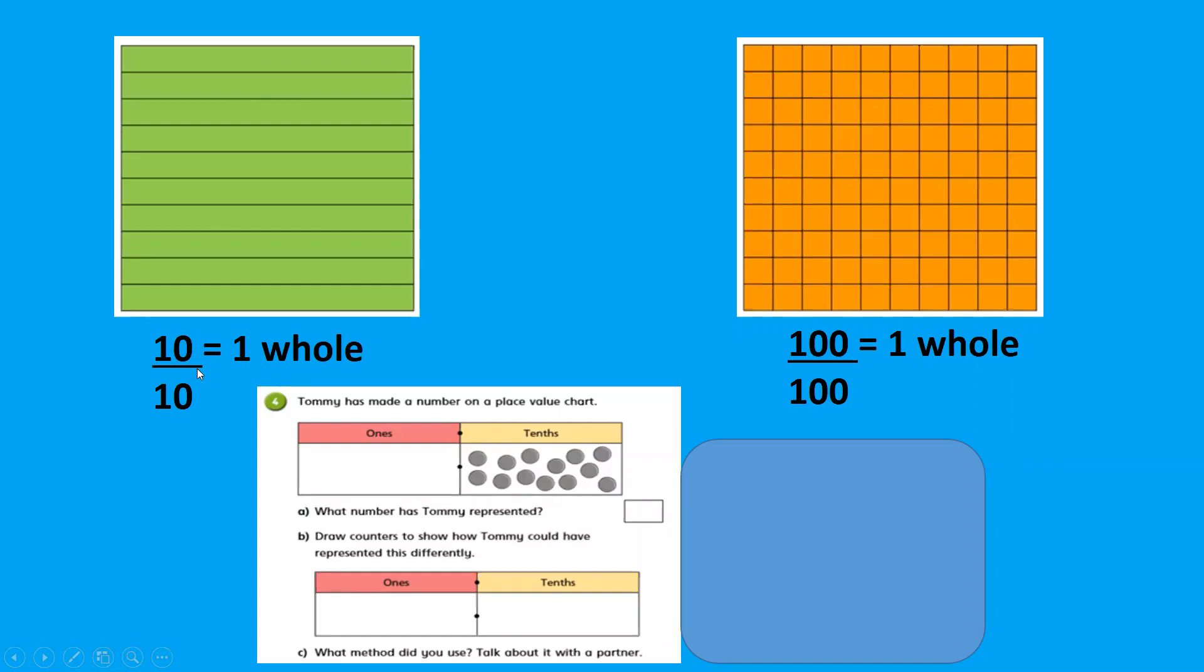We've learned so far that if there's ten parts in total and ten parts are shaded in, that equals one whole. The same with the hundredths. There's a hundred parts in total and a hundred parts shaded in. That gives us one whole. So let's look below. Tommy's made a number on the place value chart. I can count thirteen tenths. There's no ones, but there's thirteen tenths. So how could he represent that differently? I would have said that we know that ten tenths equals one. So thirteen tenths is simply one whole and three tenths.